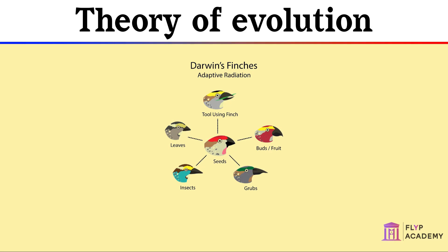The study of these birds and other organisms informed Darwin's theory, which he continued to work on and develop upon his return. After lots of study, including new knowledge of fossils and geology, Darwin eventually published his theory in his book called The Origin of Species.